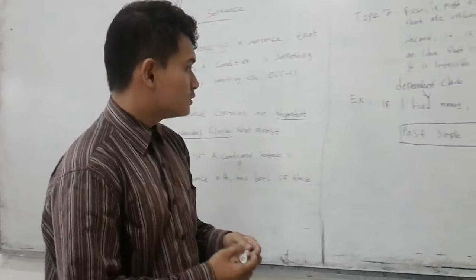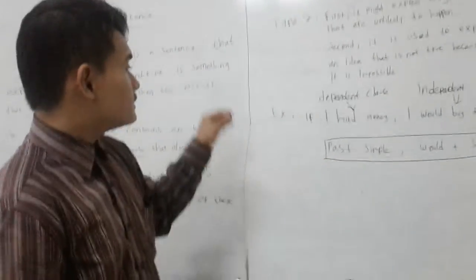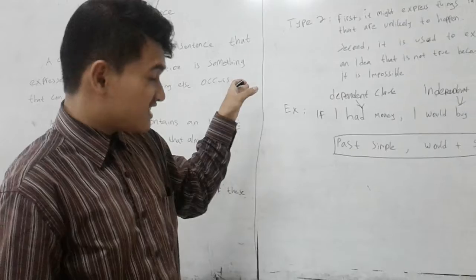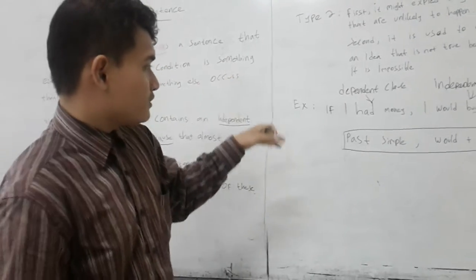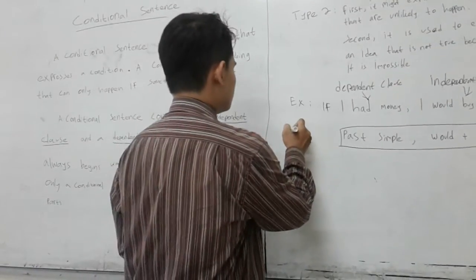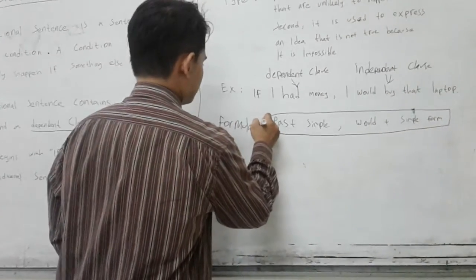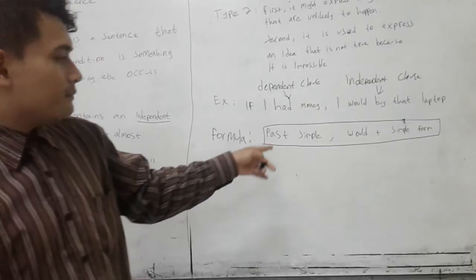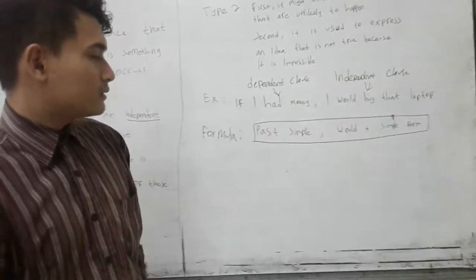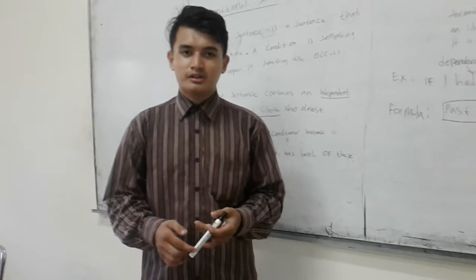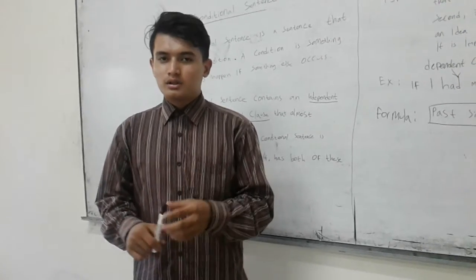So the formula for Type 2 conditional sentence is: past simple, comma, would plus simple form. I think that's all that I can explain to you. Type 1 and Type 3 will be explained by my friends.